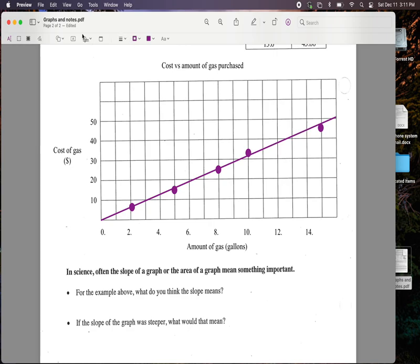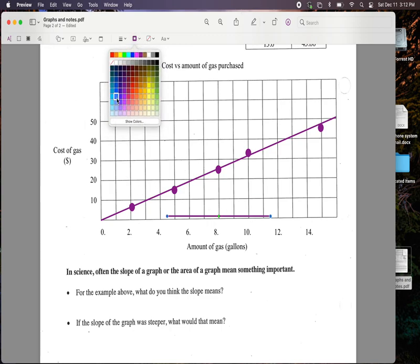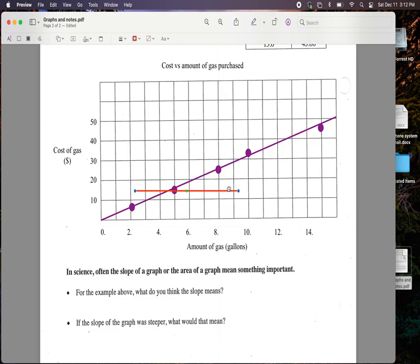If I had another line, and I'll change that color for dramatic effect, get red. If I had a line like this, that would say that, hey, gas is a lot cheaper. Now I only have to spend $20 to get 10 gallons of gas. Whereas up here, I need to spend about $32.